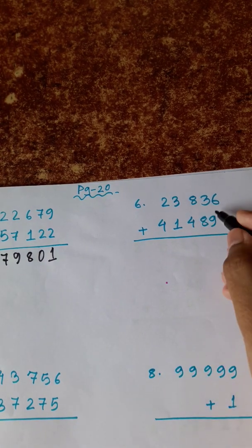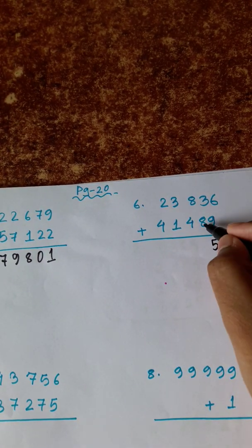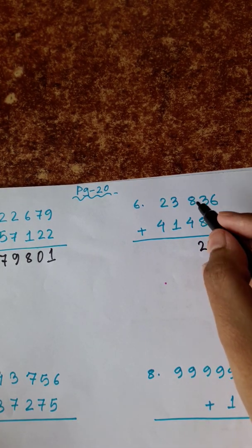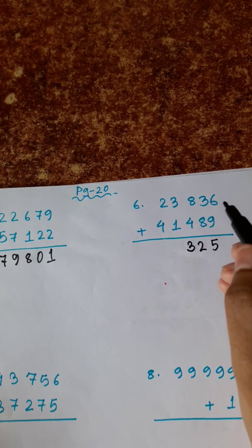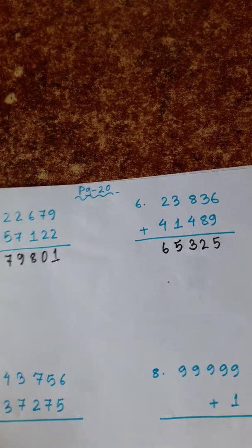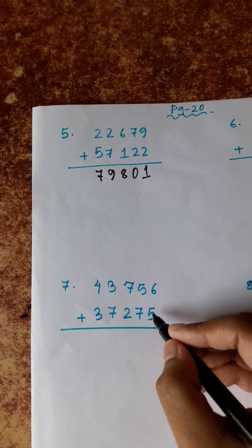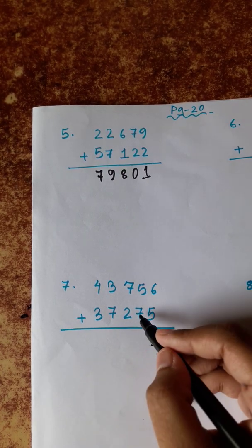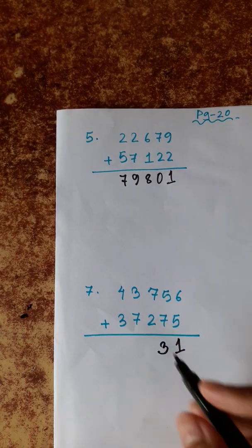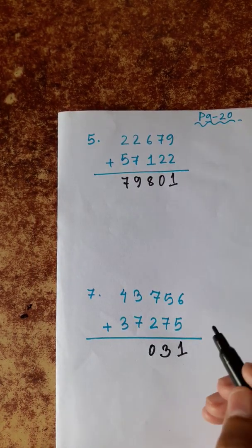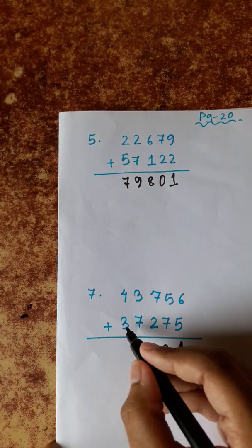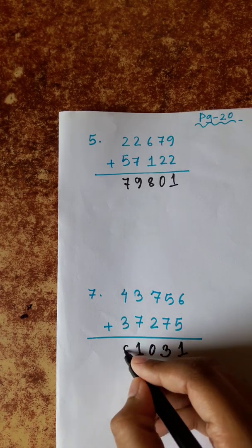Now 9 plus 6 is 15. Then 1, 8 plus 1 is 9, plus 3 is 12. Then 1, 4 or 1 is 5. 8 plus 5 is 13. Then 1, 1 plus 1 is 2. 3 plus 2 is 5. Then 6, 4 plus 2 is 6, plus 5 is 11. Then 1, 7 and 1 is 8, plus 5 is 13. Then 3, 1. Then 11, 2 and 1 is 3. 7 plus 3 is 10 — 0 remainder 1. Then 7 and 1 is 8, plus 3 is 11. Then 1, 3 plus 1 is 4, plus 4 is 8.